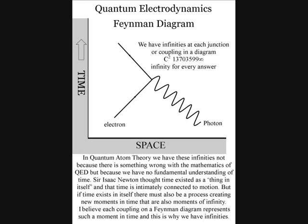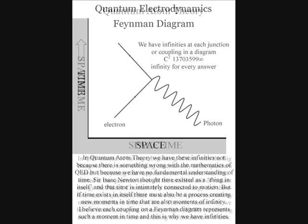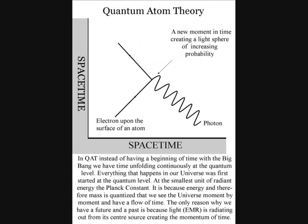But if time exists in itself, there must also be a process creating new moments in time that are also moments of infinity. I believe each coupling on a Feynman diagram represents such a moment in time, and this is why we have the infinities that have to be cancelled out by renormalization.